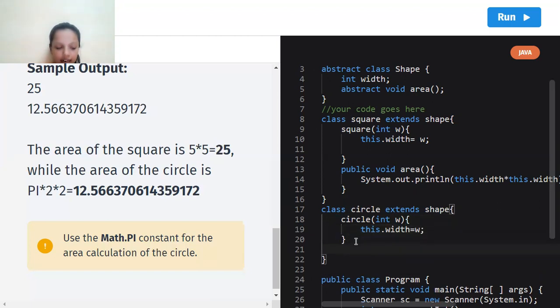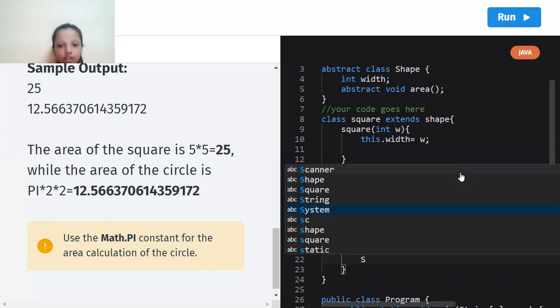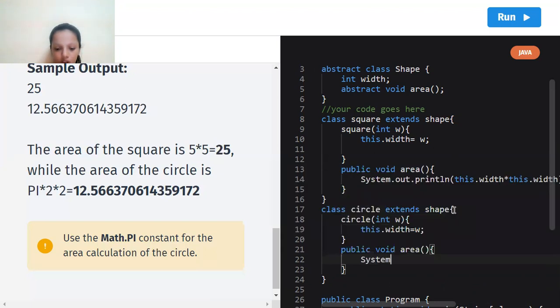Again we're going to go down and start with a new part which is the same thing, public void area. So public void area. Now we're going to do the same thing, dot out dot println. System.out.println.